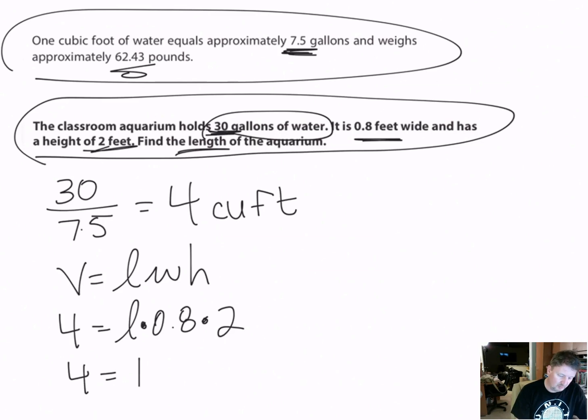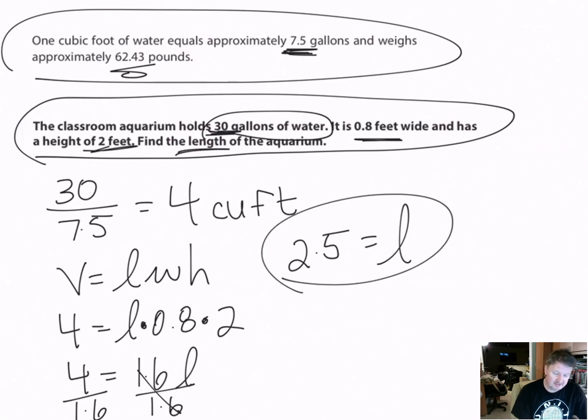Still the same thing as the last problem - we're multiplying, so I have to undo it by doing division. I'm going to divide 4 by 1.6. These are going to cancel and give me just l. Then 4 divided by 1.6 is going to give me 2.5. That is the length of my aquarium, and that's all there is to it, guys.